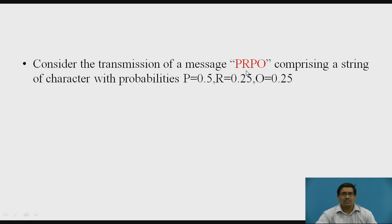If you observe these characters, how many characters are present? 1, 2, 3, 4. Therefore, total 4 characters are present. I want to calculate the probability of character P. How many characters of P are present? 2. Therefore, the probability of P is 2 by 4, that is 0.5. In the same way, the probability of R is 1 by 4, that is 0.25. And similarly, the probability of O is 1 by 4, that is 0.25.